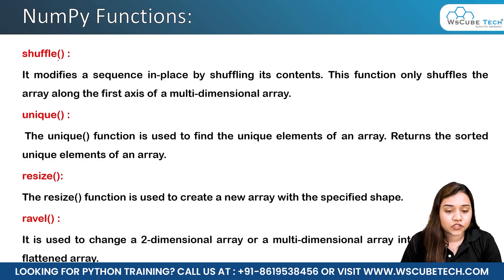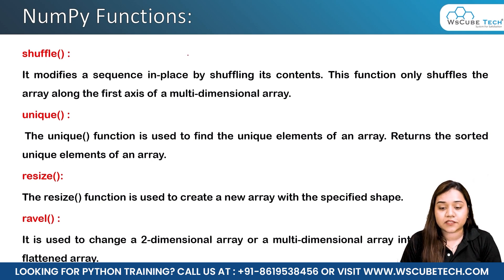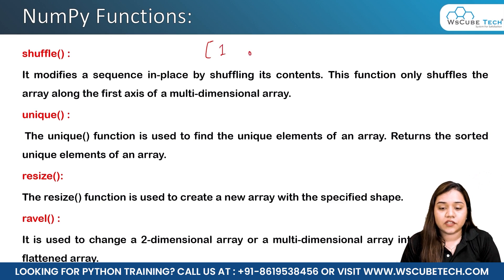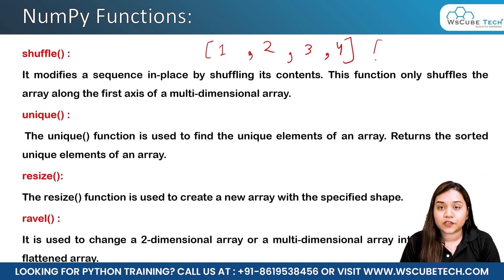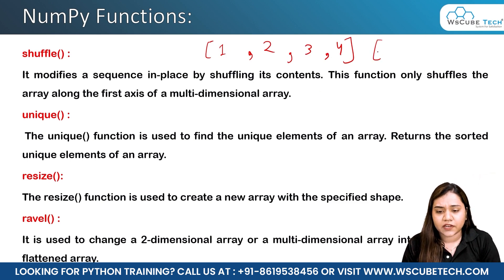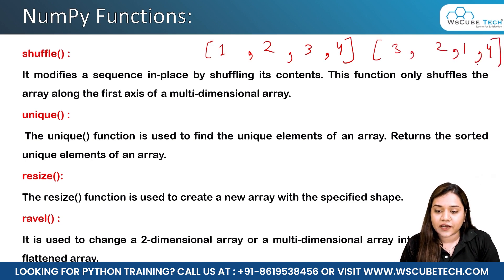The first function is shuffle. As the name suggests, it shuffles the elements. Suppose you have an array with elements one, two, three, four — if you shuffle it you will get random elements. So we will be randomly shuffling it and we might get three, two, one, four, or any random output with the elements shuffled.